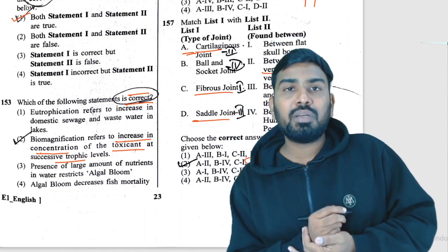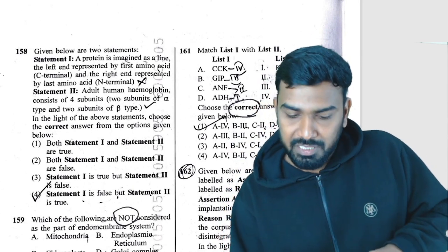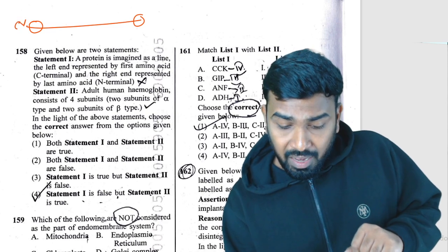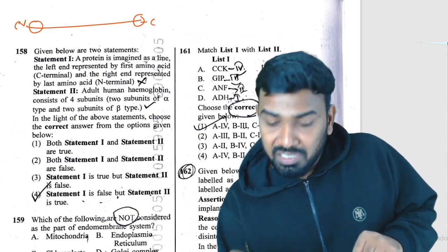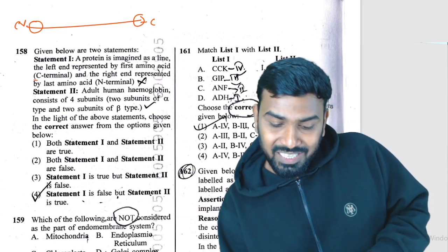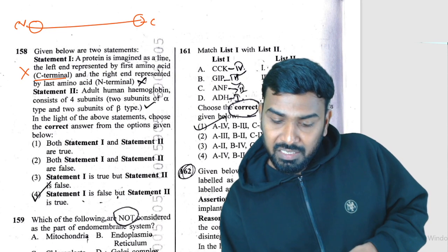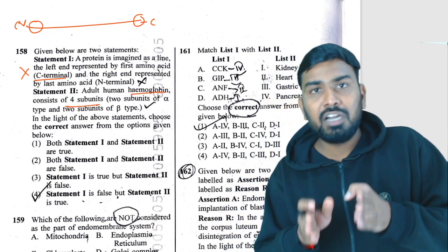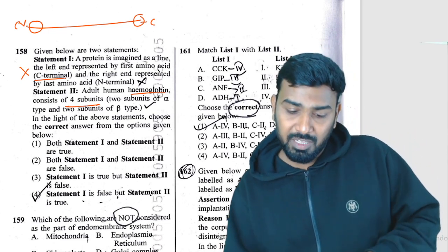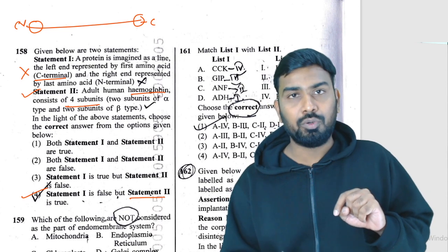Question 158: for a peptide or protein, the first amino acid has a free N-terminus and the last amino acid has a free C-terminus. Statement one says the first amino acid is at the C-terminal — that is wrong. Statement two says adult hemoglobin has four subunits — two alpha and two beta chains — that is correct. So statement one is wrong and statement two is true.